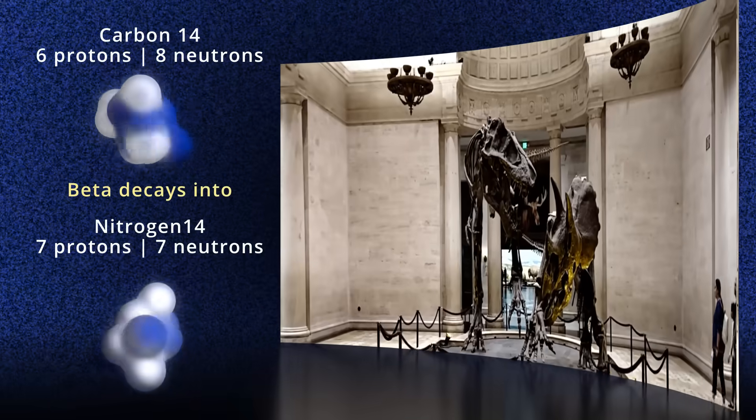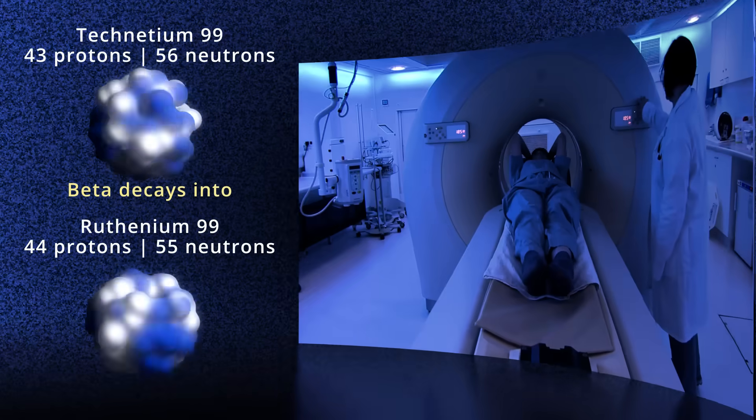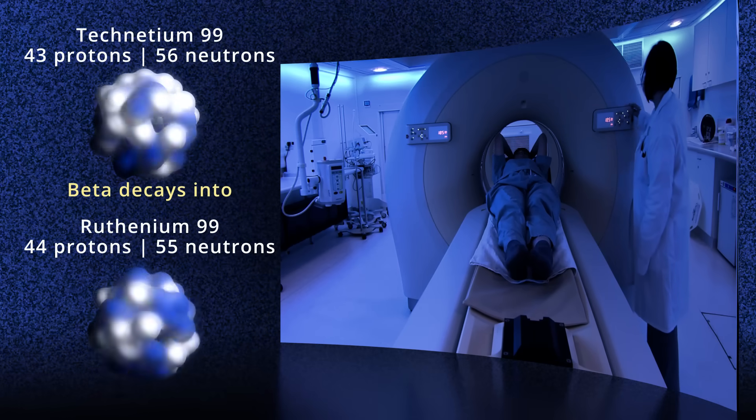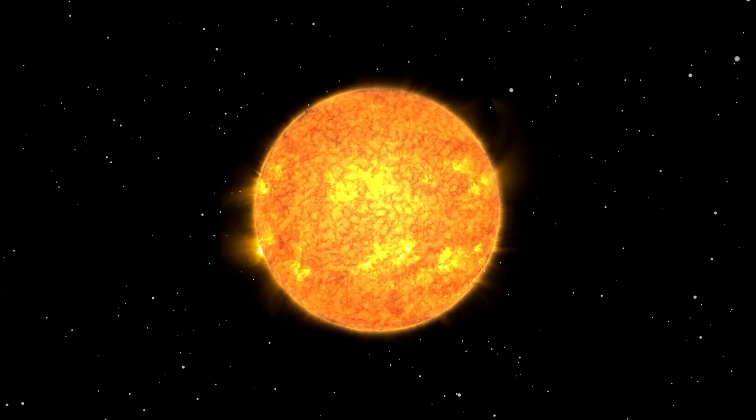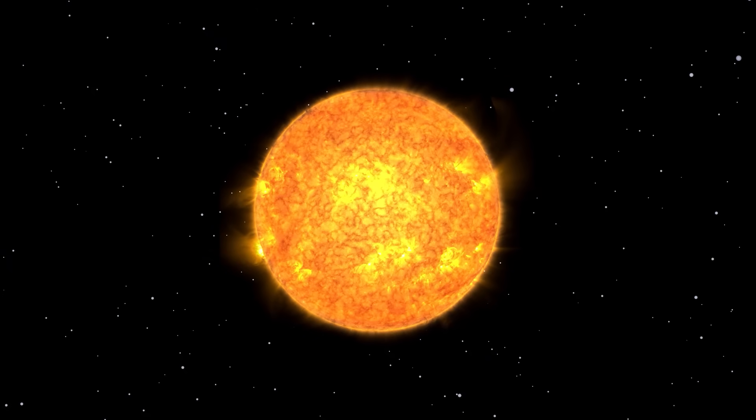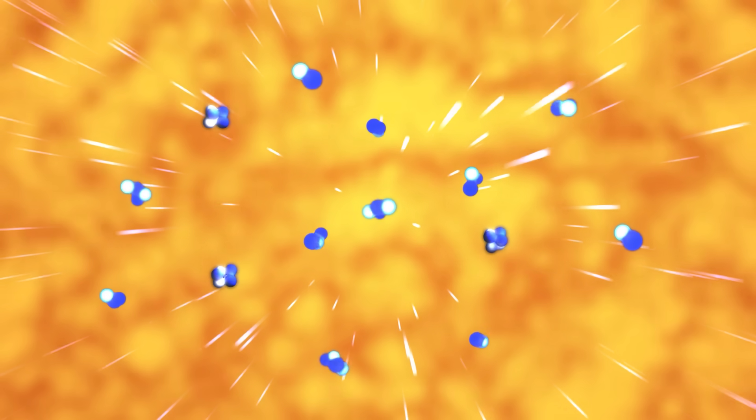Other notable uses of beta decay include carbon-14, that is used to date our Earth, world history and art, and technetium-99, that is widely used in nuclear medical imaging. Beta decay is also essential to the fusion process in the Sun, that is responsible for the creation of the lighter elements in stars.